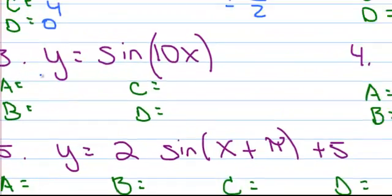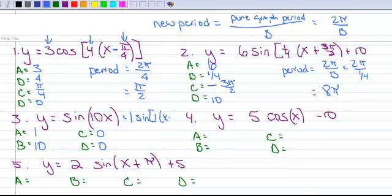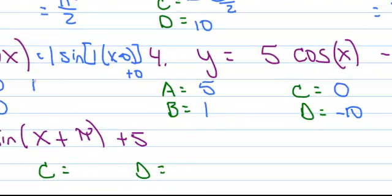All right, so number three. A is one, B is ten, C is zero, and D is zero. So I could have rewritten this as one sine one X minus zero plus zero. Number four, A is five, and B is one, C is zero, and D is negative ten. Oh, we forgot to figure out the period for number three. Okay, let's go back and do that. So the period is equal to two pi over ten, and then when I reduce that, I get pi over five.